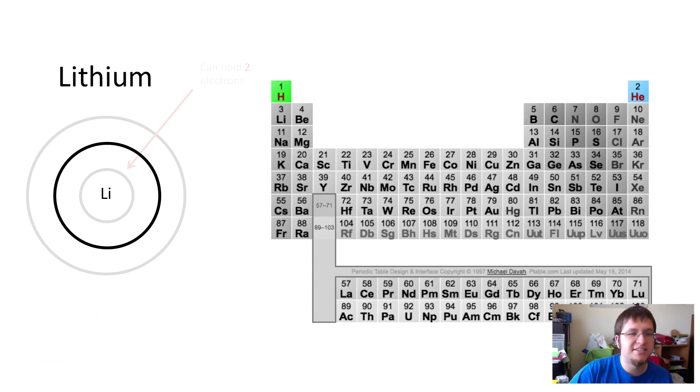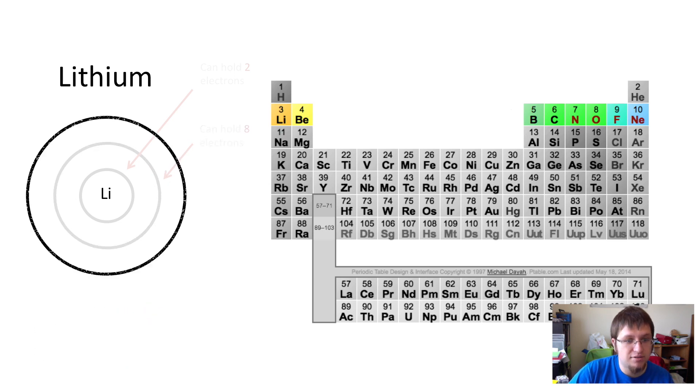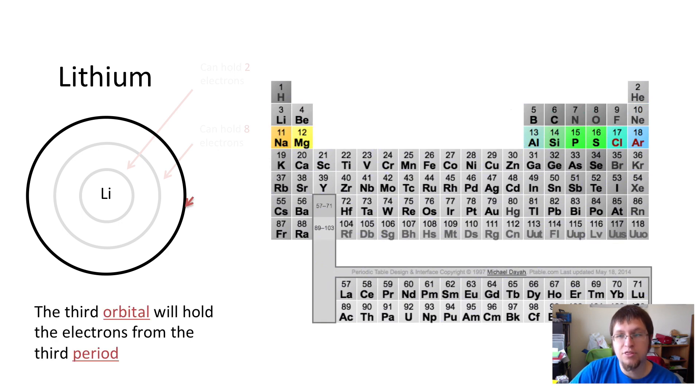Zooming out, the second shell is going to be able to hold all of the electrons from the second period. We count those up, and that's going to be eight electrons. And then, the third shell is going to be able to hold all of the electrons from the third period. It's going to be able to hold those eight. You notice that there's the quote marks around the eight because, in all honesty, it can hold a little bit more. But for the purposes of this class, we're going to simplify things and say it can hold only eight.